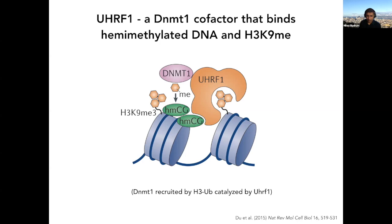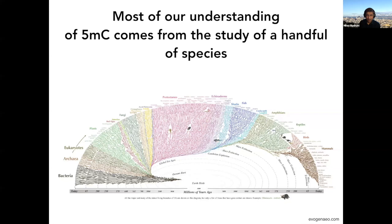Most of our understanding of 5-methylcytosine in eukaryotes comes from a handful of species. There's been tremendous work in mammals and in plants, particularly Arabidopsis by Steve Jacobson. In fungi, work has been done in Neurospora crassa by Eric Selker since the 1980s, who made many important contributions — including being the first to show that H3K9 methylation can be required for CpG methylation.